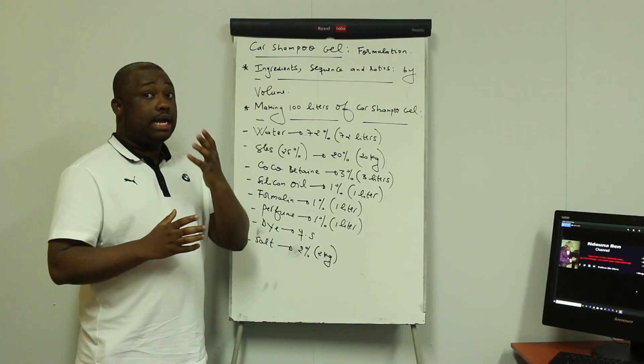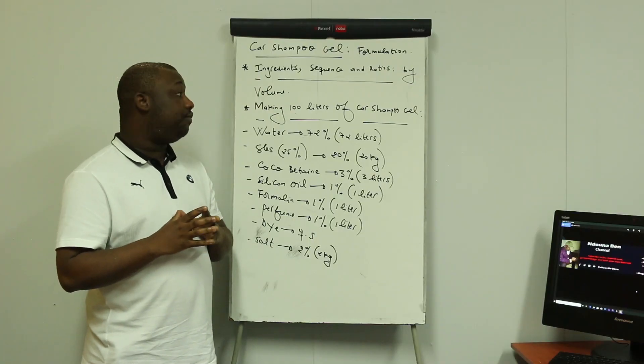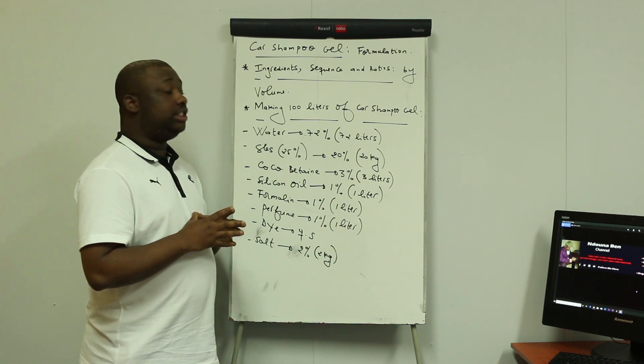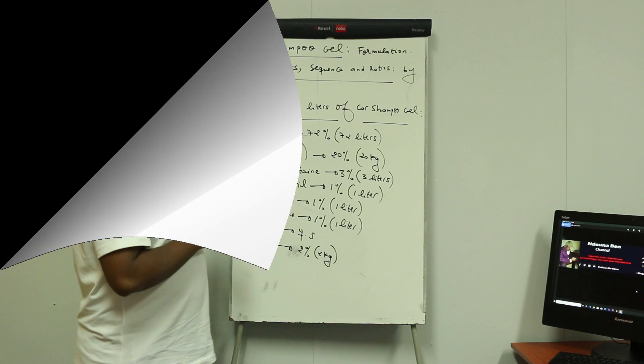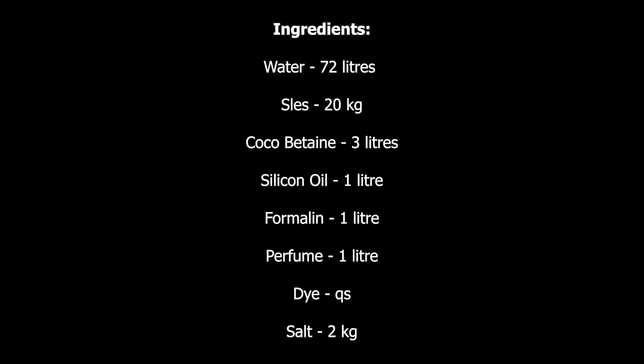Now let's figure out the ratios for manufacturing 100 liters of car shampoo gel — this is done by volume. The first ingredient is water, which should be 72% of the total volume. Out of the 100 liters we manufacture, we need 72 liters of water. The SLES we're using, as stated previously, must have a strength of 25% and needs to be 20% of the total volume — out of 100 liters, we need 20 kg of SLES.